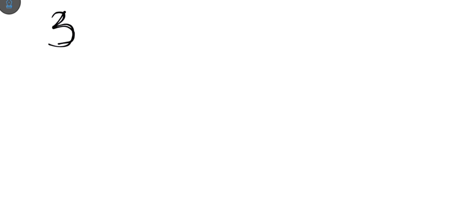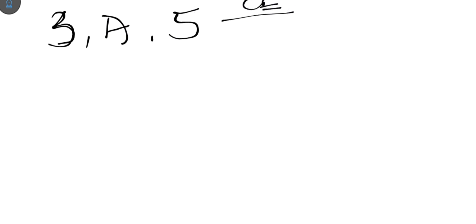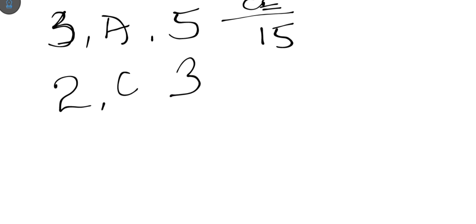For example, if a course has a 3-credit load and you earn A, the point for A is 5, so the credits earned for that course is 3 × 5 = 15. If there is a 2-credit unit course and you earn C, which has 3 points, the credits earned is 2 × 3 = 6.